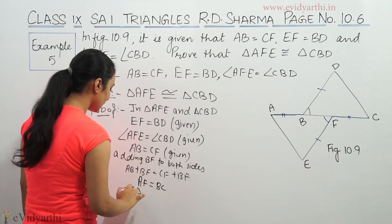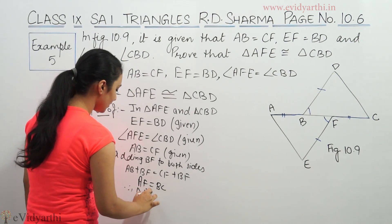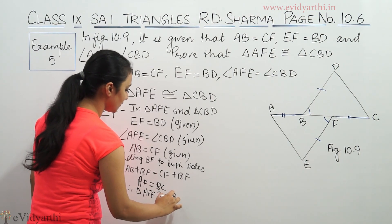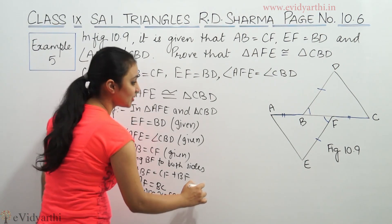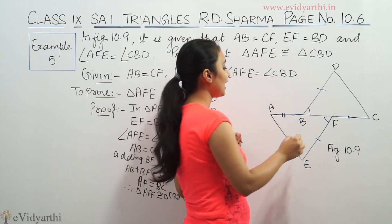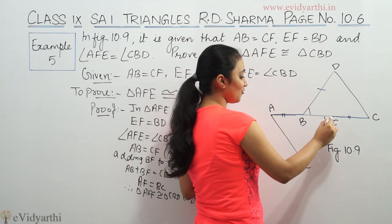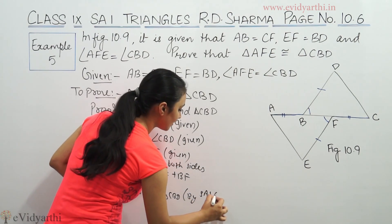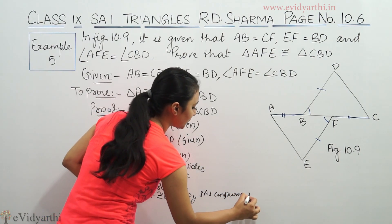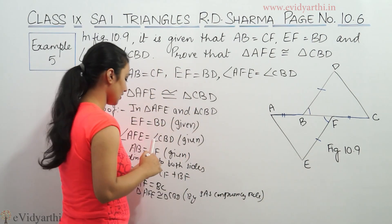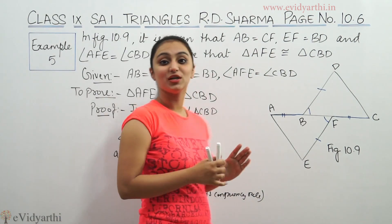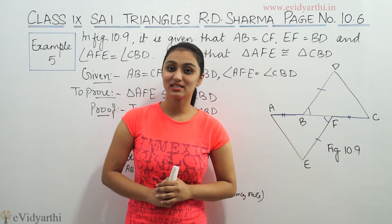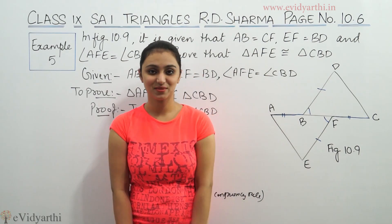So these three things are now established. Triangle AFE is congruent to triangle CBD. We have one side, then an angle, then another side — so this is the SAS (Side-Angle-Side) congruency rule. Both triangles are congruent. This was example 5 from R.D. Sharma. Do watch the next video for more questions. Bye-bye.